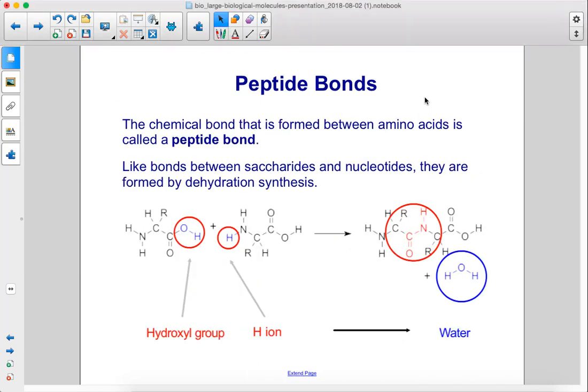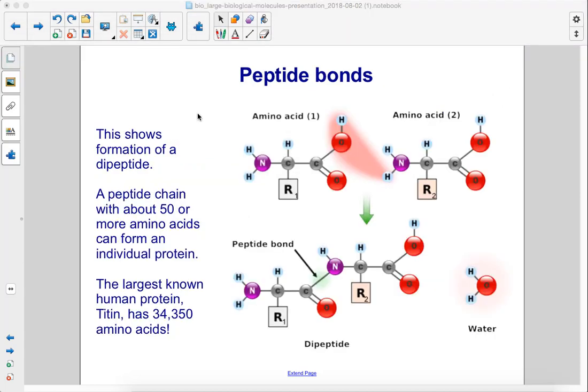The chemical bond that is formed between amino acids is called a peptide bond. Like bonds between saccharides and nucleotides, they are formed by dehydration synthesis. This shows formation of a dipeptide. A peptide chain with about 50 or more amino acids can form an individual protein.